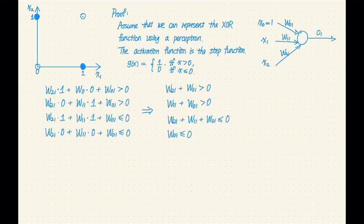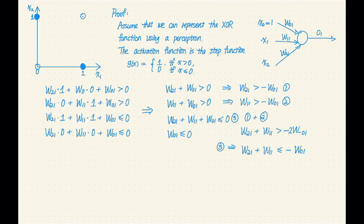Let me do some manipulations with these inequalities. So I rewrote the first two inequalities and named them 1 and 2, and then I added those two together to get this one. So W21 plus W11 is greater than negative 2 times W01.